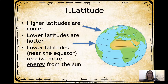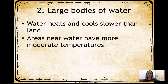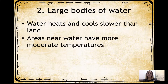What determines climate? The first thing is latitude. The higher latitudes are cooler — looking at the North Pole at the top, the numbers increase from the equator going up. Those lower latitudes around the equator are going to be a lot hotter, just because of the direct sunlight received. These lower latitudes receive more energy from the sun because it's a more direct hit rather than at an angle. Also, how close you are to large bodies of water matters, since water heats and cools differently than land.